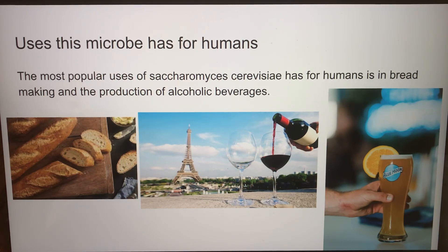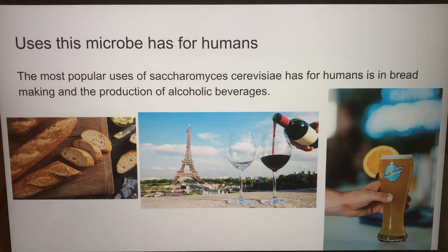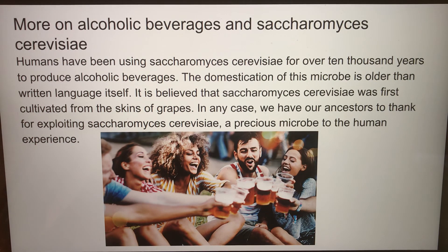The most popular uses of Saccharomyces cerevisiae for humans are in bread making and the production of alcoholic beverages — pictured here are a French baguette, wine, and Blue Moon beer. Humans have been using Saccharomyces cerevisiae for over 10,000 years to produce alcoholic beverages; the domestication of this microbe is older than written language itself. It is believed that Saccharomyces cerevisiae was first cultivated from the skins of grapes, and we have our ancestors to thank for exploiting this precious microbe to the human experience.